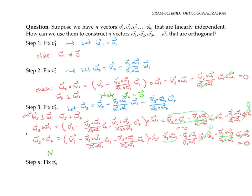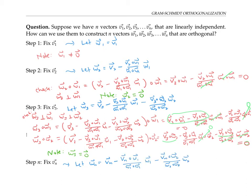The same argument as before tells us that w3 cannot be the zero vector. It's a linear combination of v3, w1, and w2, and since w1 and w2 are themselves linear combinations of v1 and v2, w3 is really a linear combination of v3, v1, and v2 with the coefficient of v3 equal to one. Linear independence then tells us this can't be the zero vector. We continue in this way, fixing v4, v5, and so on. Finally, the last vector vn is replaced by wn, which equals vn minus a multiple of w1, minus a multiple of w2, and so on, down to subtracting a multiple of w(n-1).